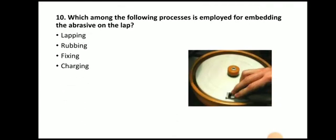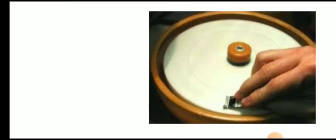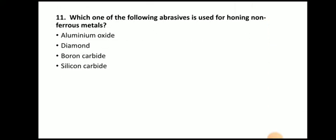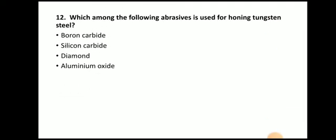Next question: which process is employed for embedding the abrasive on the lap? The answer is charging. We apply the lapping paste over the lapping plate — this process is called charging. Next question: which abrasive is used for honing non-ferrous material? The answer is silicon carbide. Next question: which abrasive is used for honing tungsten steel? The answer is diamond.